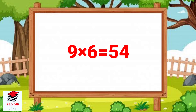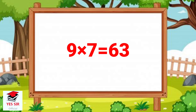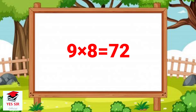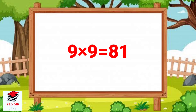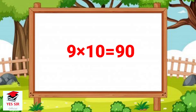9 and 6 is equal to 54. 9 and 7 is equal to 63. 9 and 8 is equal to 72. 9 and 9 is equal to 81. 9 and 10 is equal to 90.